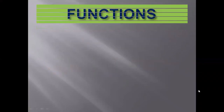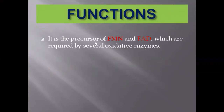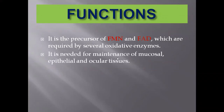Now let's talk about the functions of riboflavin. It is the precursor of FMN — Flavin mononucleotide — and FAD — Flavin adenine dinucleotide — which are required by several oxidative enzymes. It is also needed for the maintenance of mucosal, epithelial, and ocular tissues.